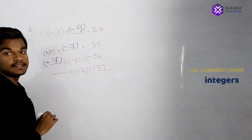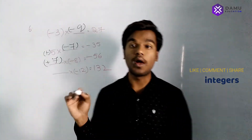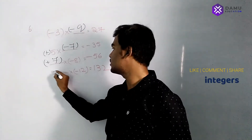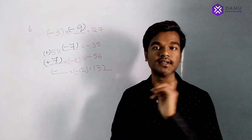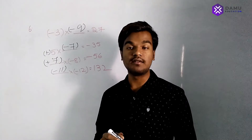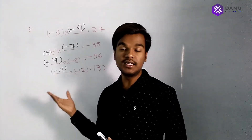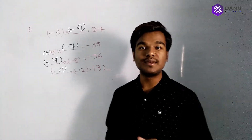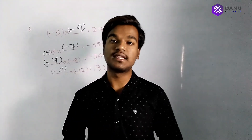Next: minus 12 into blank equals plus 132. The left side has minus, so we need one more minus — because same signs multiplied give plus. So minus 12 into minus 11: 12 times 11 is 132 (12 ones are 12, carry 1; 12 ones are 12 plus 1 is 13), so minus into minus becomes plus 132. If you like the video please give thumbs up and subscribe.